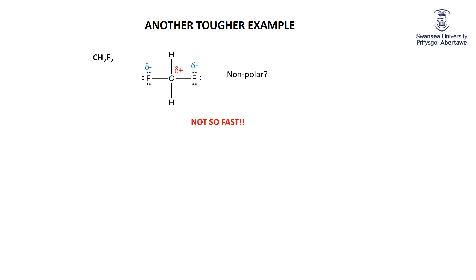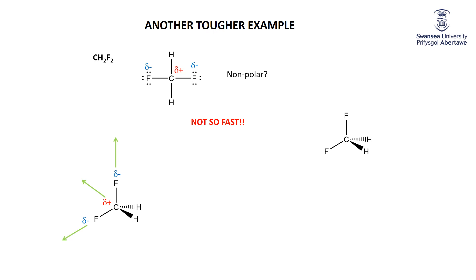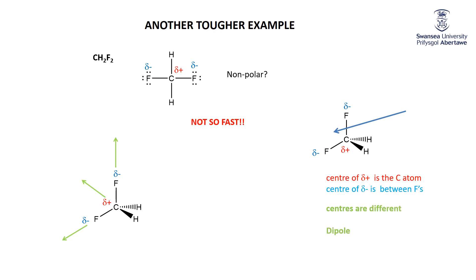What you've forgotten is that carbon with four groups of electrons is not two-dimensional — it is a three-dimensional tetrahedron. With the tetrahedral geometry, the two fluorines are both pulling electron density in the same general direction. When you add those two vectors, the net result points in one direction. The center of the slightly positive charge is the carbon; the center of the slightly negative charge is between the two fluorines. Those centers are different, so this is a polar molecule.